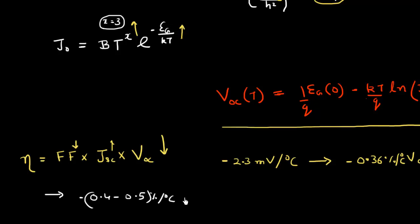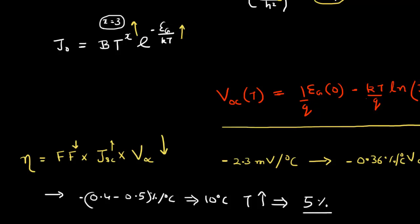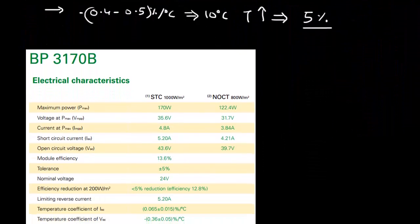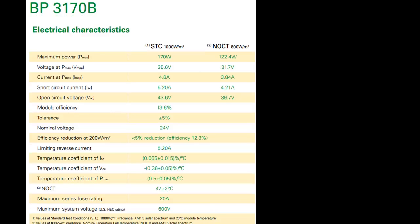If I have a 10°C increase in temperature, then my efficiency would decrease by approximately 5%, meaning my module would produce 5% less electricity. This temperature dependence for JSC and VOC is typically very well documented in the specification sheet for each solar module.